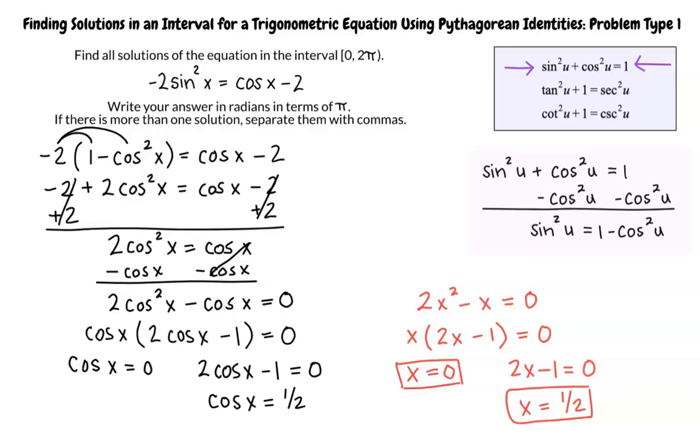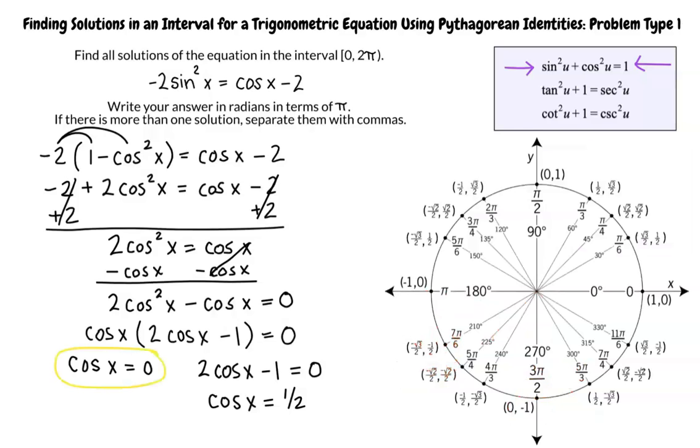To complete our work, we need to solve for x in both equations. First, let's consider the left half of our answer, cos x = 0. We need to find x values in the interval 0 to 2π that have the cosine equal to 0. We know that cos(π/2) = 0, and cos(3π/2) = 0. So, for this part of the problem, we know that x = π/2 and 3π/2.